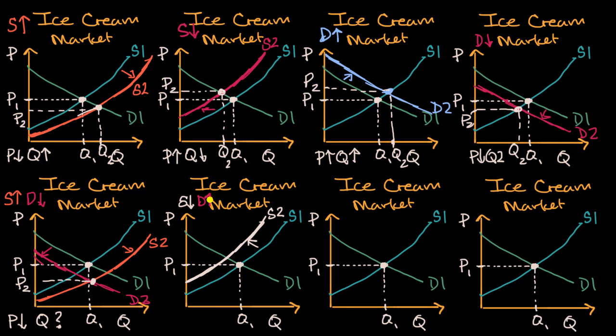And our demand has gone up. At a given price, we would demand more. Or at a given quantity, we would be willing to pay more. So we would shift our demand curve now, D2. We would shift to the right and up.